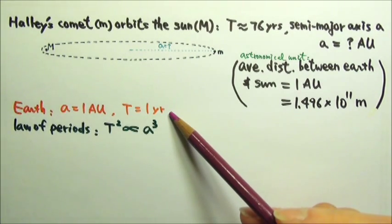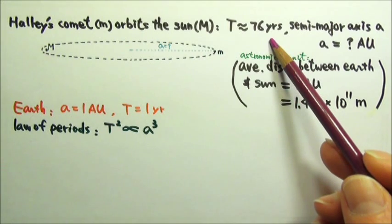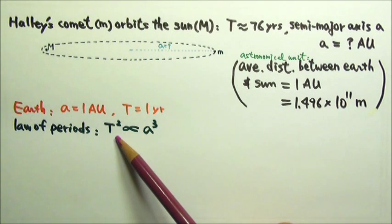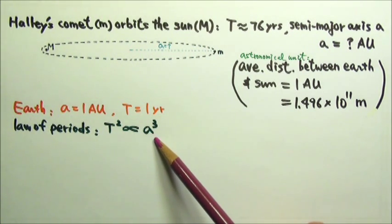With this information, we can compare Halley's Comet to the Earth using Kepler's law of periods. Period squared is proportional to semi-major axis cubed.